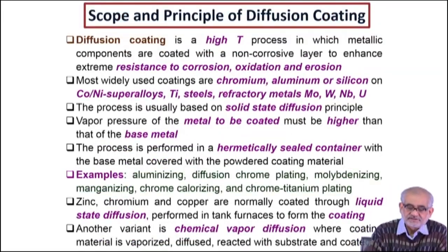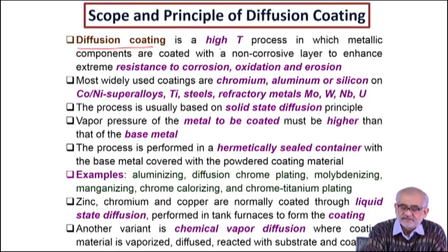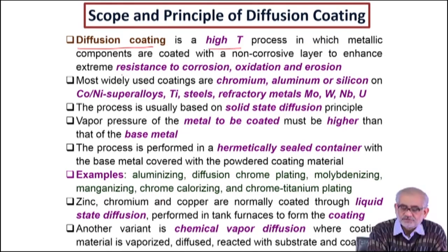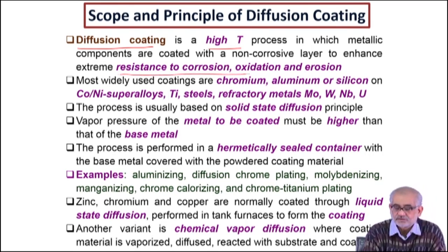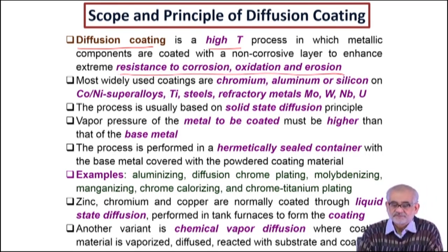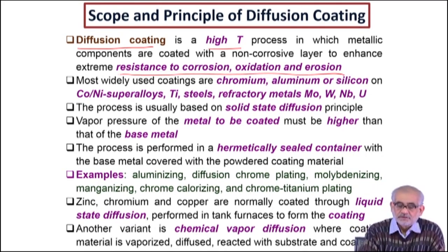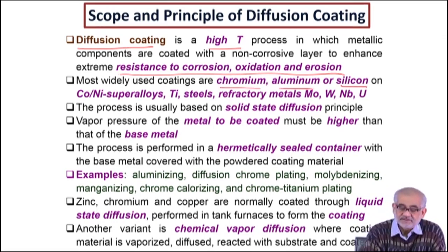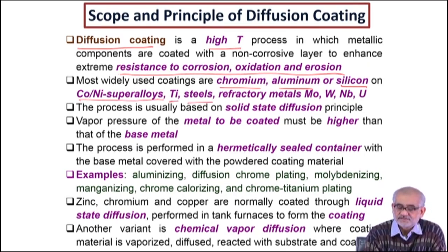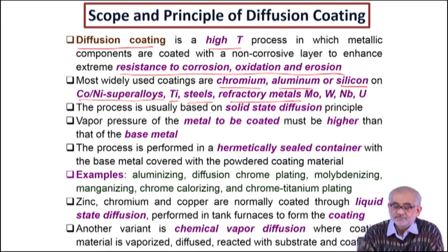The guiding principle for diffusion coating is that we are talking about a high temperature process whose main intention is to induce sufficient resistance against corrosion, oxidation, erosion, and in some cases wear. The coatings used are typically based on chromium, aluminium, and silicon — for high temperature resistance applications on superalloys like cobalt and nickel-based superalloys, or on titanium, steel, or refractory metals like molybdenum and tungsten, which are very high melting materials but still prone to oxidation.